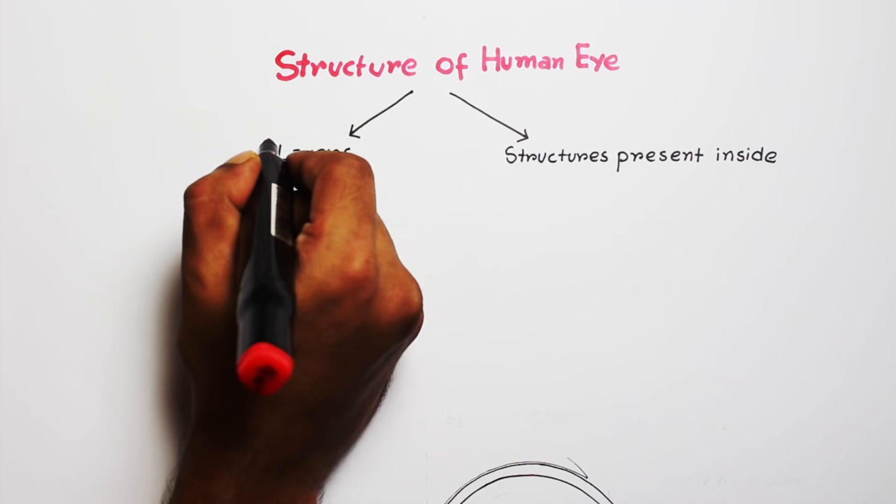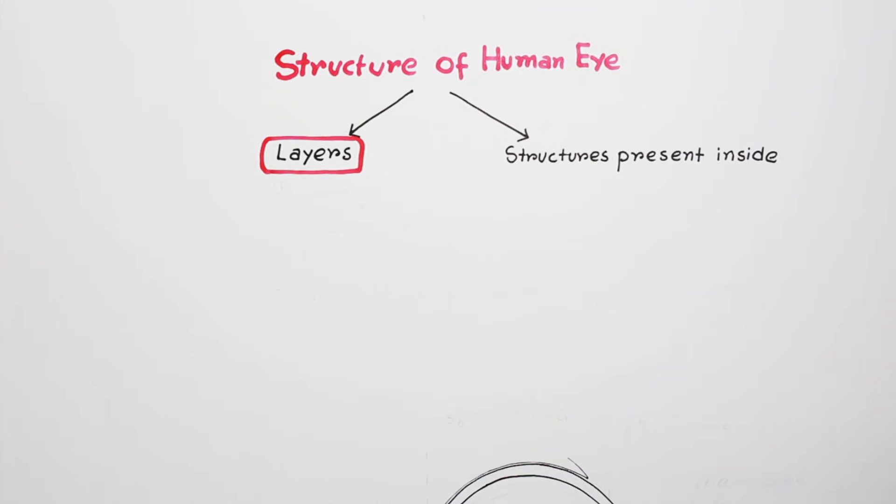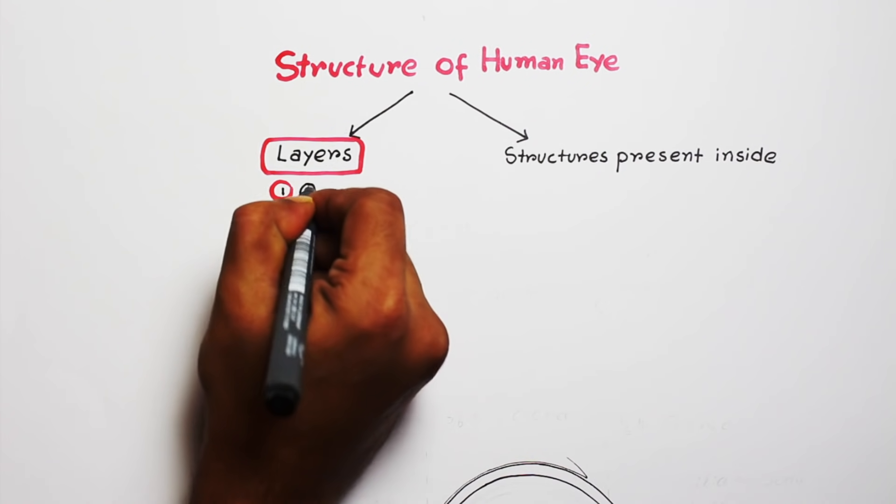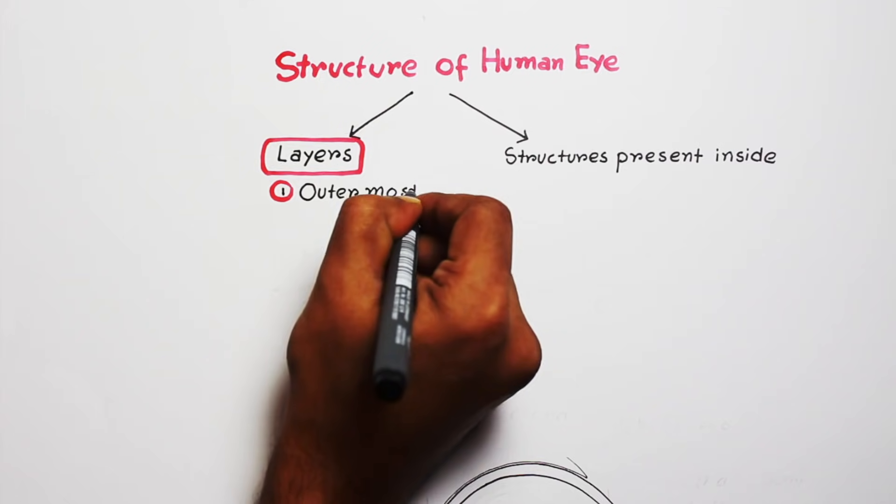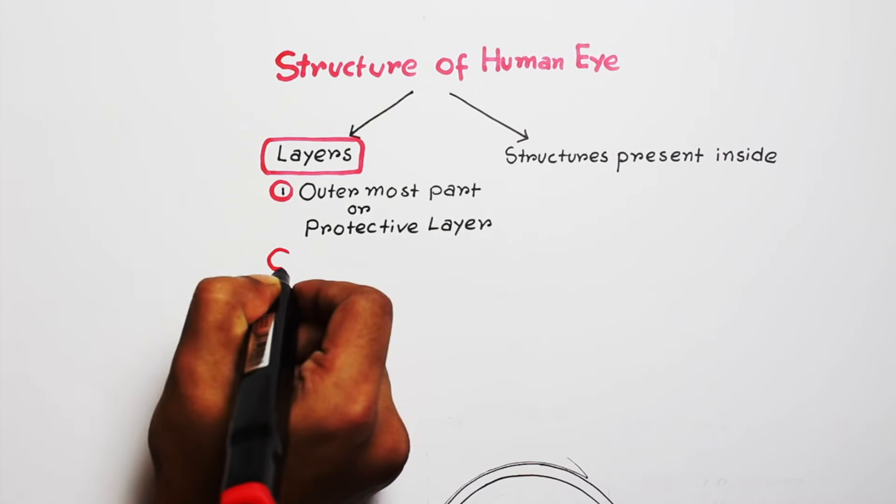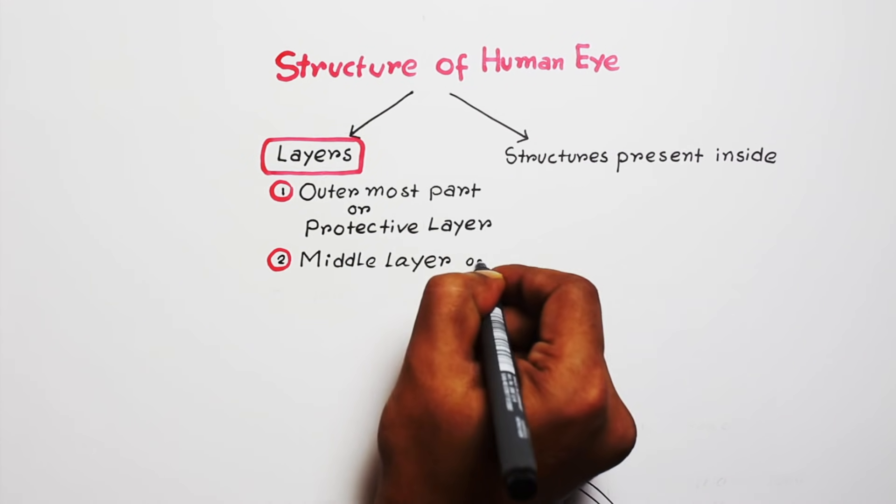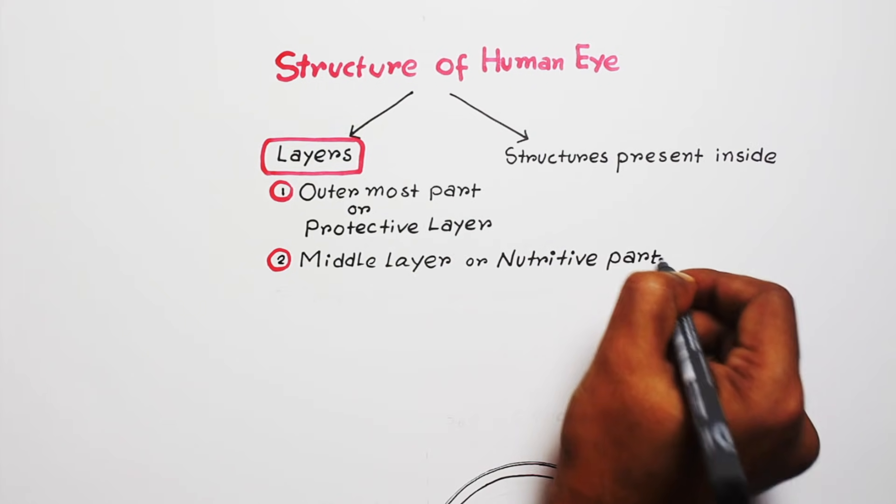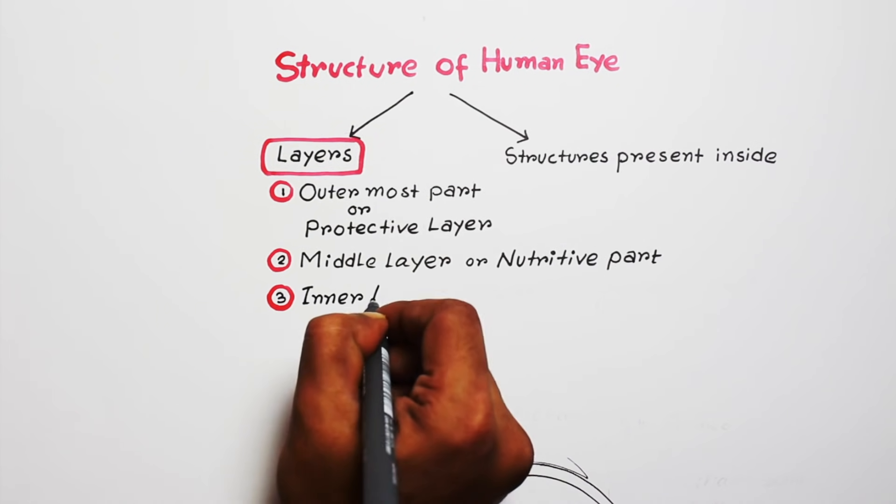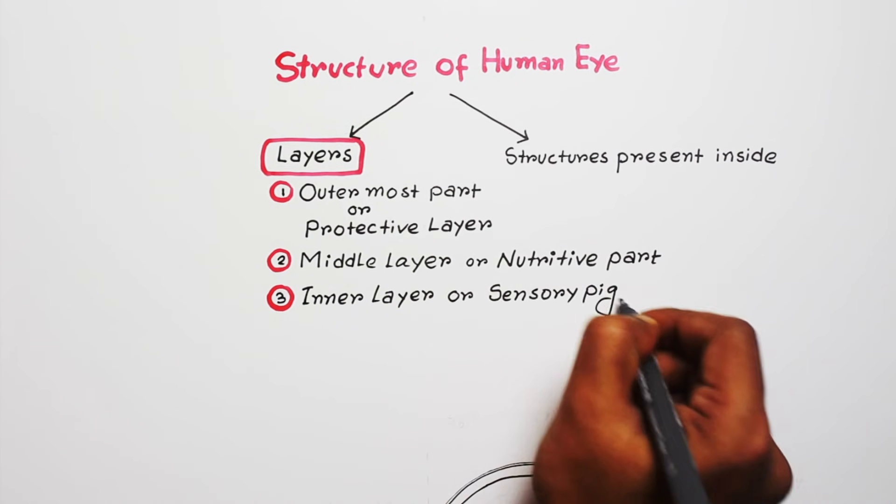Let's discuss the layers first. Basically, it has three layers: the outermost protective layer, middle nutritive layer which provides nutrition, and inner sensory pigmented layer.